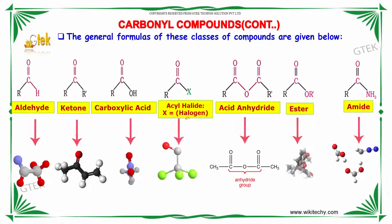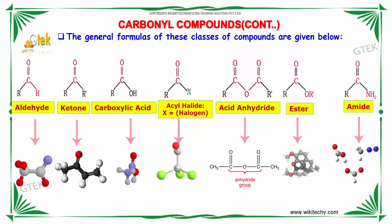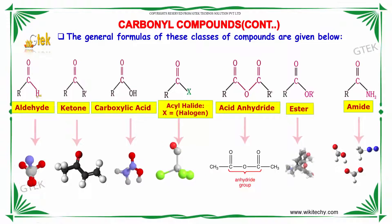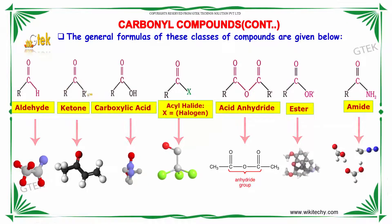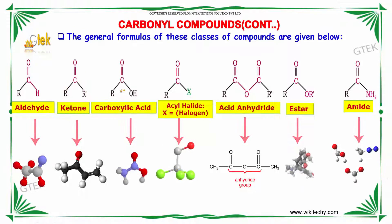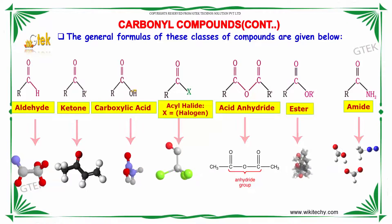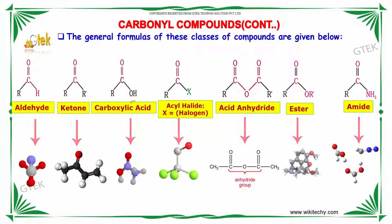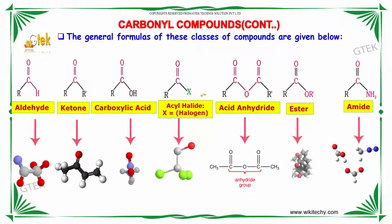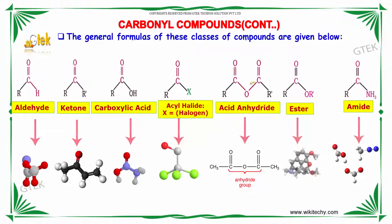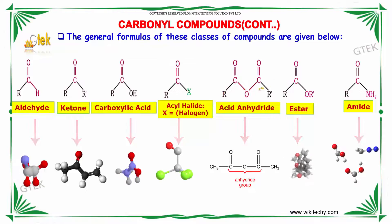The general formulas of these classes of compounds are given below. RC double bond O-H is known as aldehyde, and RC double bond O-R is known as ketone. If we have an OH group instead of the alkyl group, it is known as carboxylic acid. If we have a halogen instead of that substituent, it is known as acylhalide. If one more C double bond O group is attached to this carbon, it is known as acid anhydride.